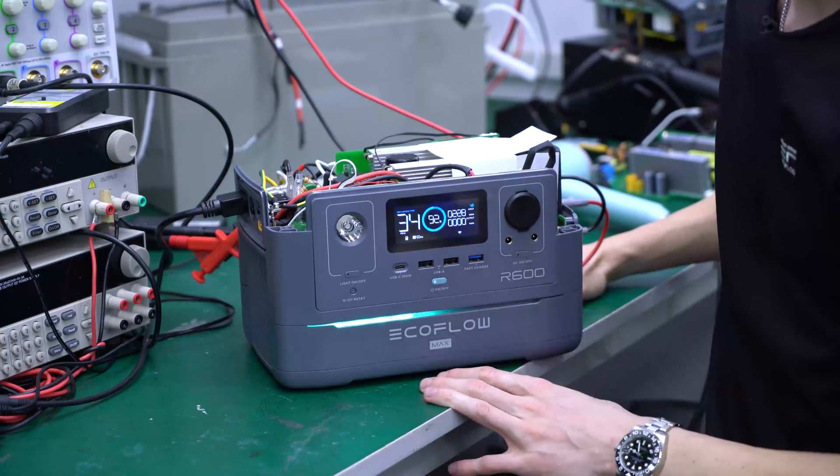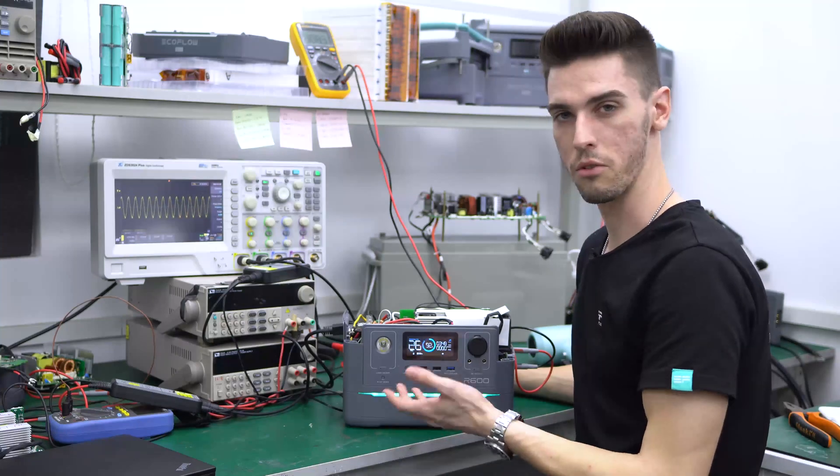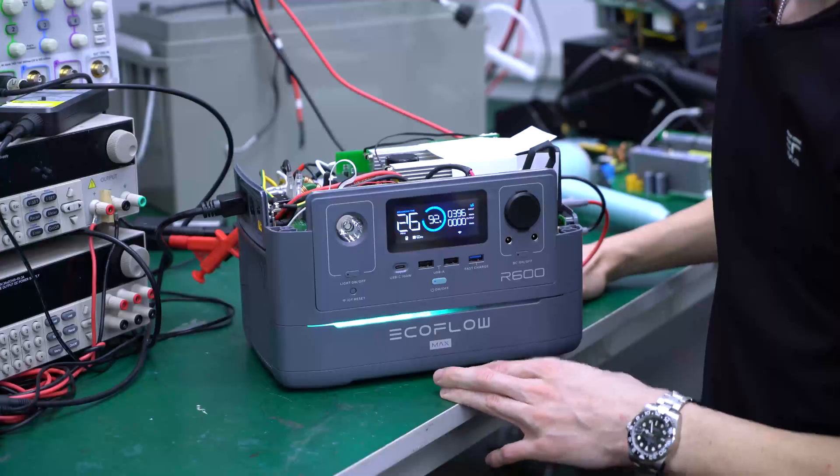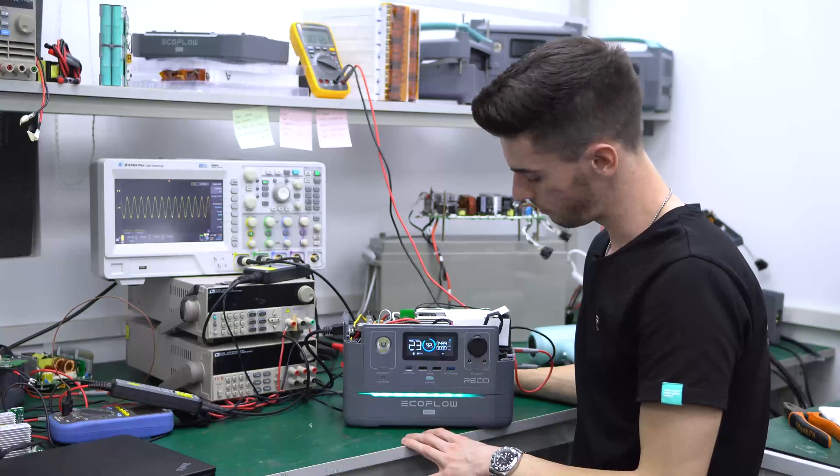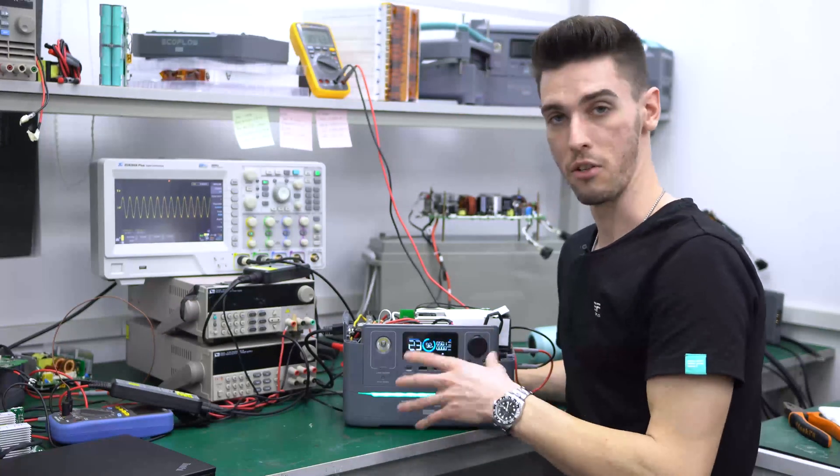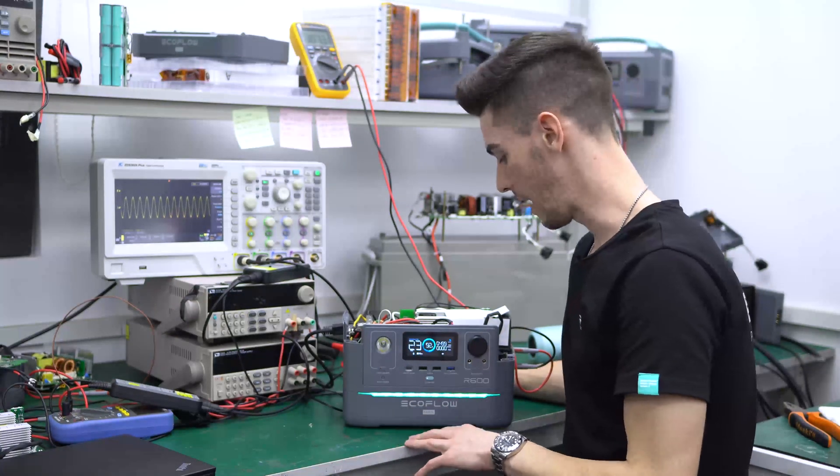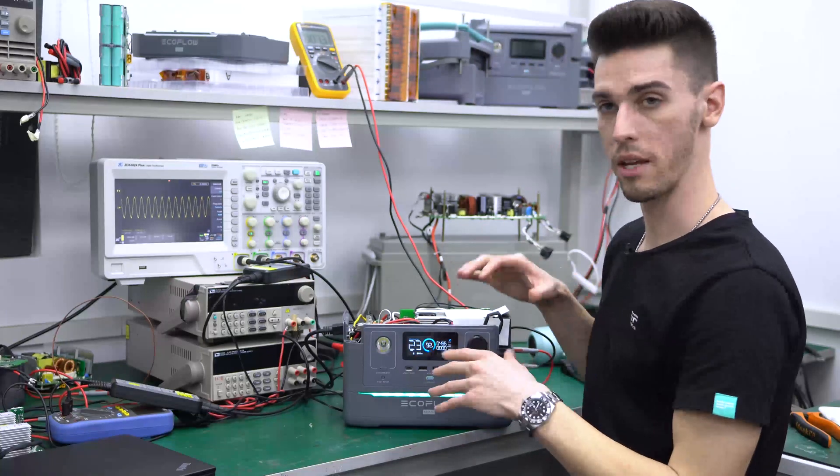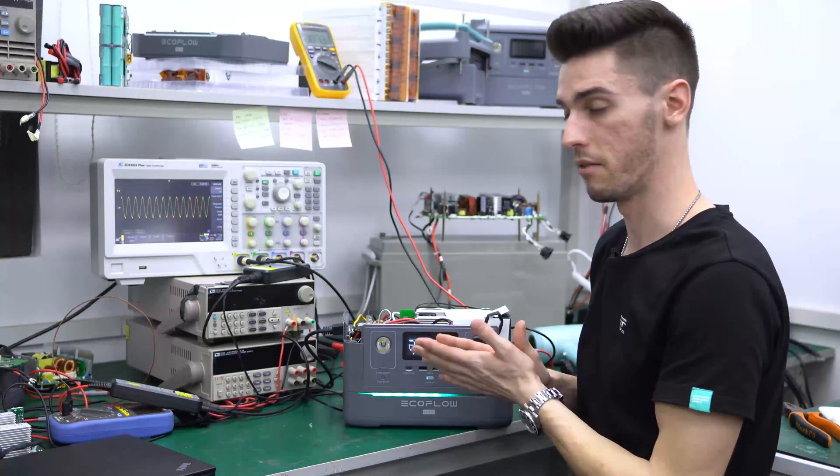And I'm going to plug in the AC input and you'll be able to start seeing the input watts climb. So 100, 200, 300, this should go to about 500 watts, 400, 499, okay 500. So this is going to allow you to charge extremely fast. And the reason this is possible is because of the way that we configured the bidirectional high-frequency inverter.